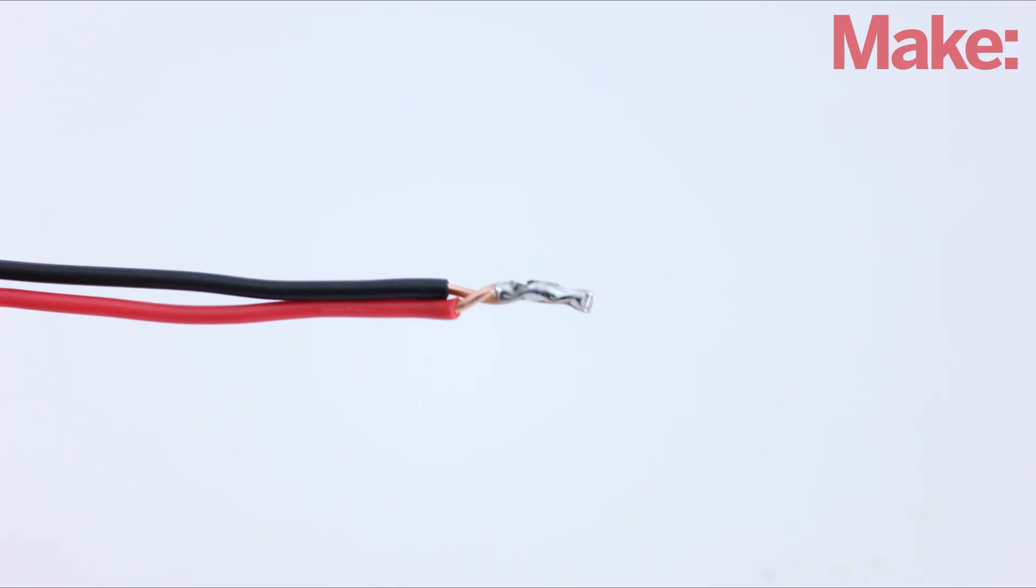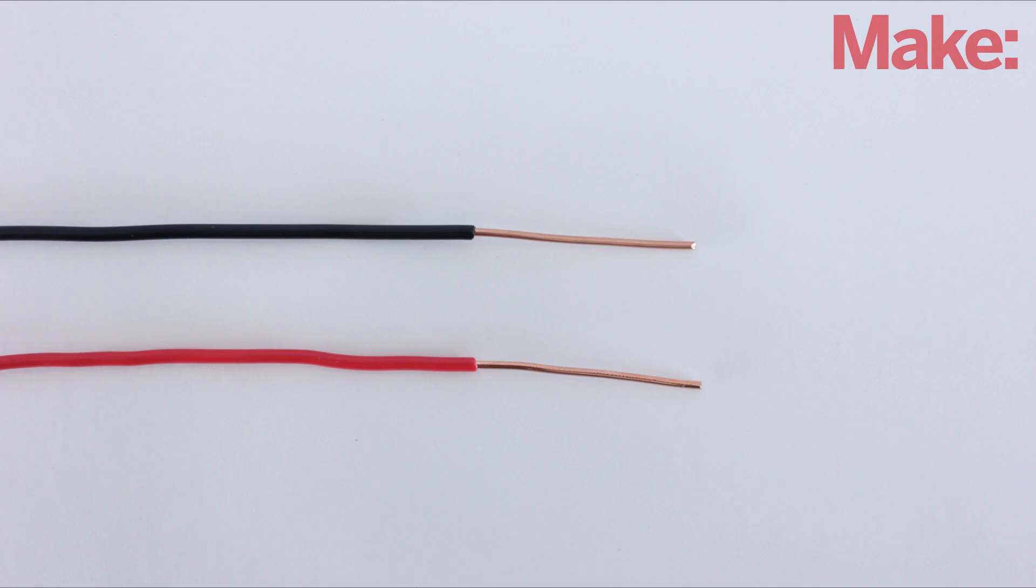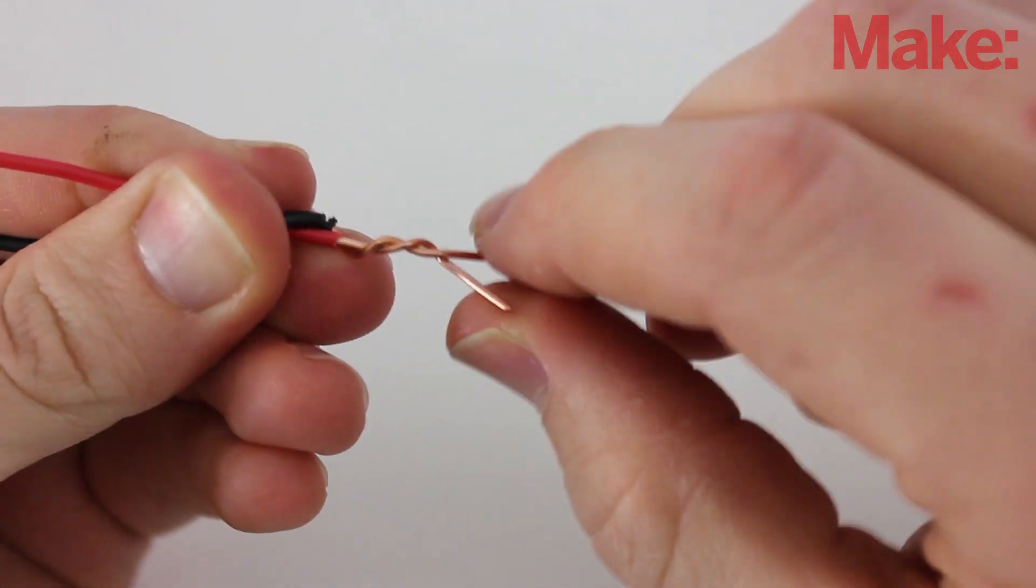The simplest kind of soldering is just connecting two wires together. This can be done by heating the wires directly and doesn't require any kind of a soldering iron. Take two wires and strip the insulation off the ends. Then twist the wires tightly together.